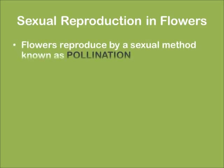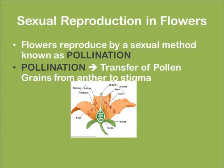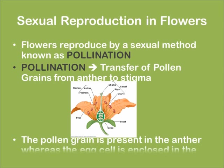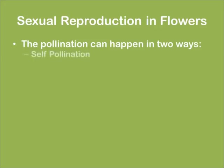The flower is reproduced by a sexual method called pollination. Pollination is the transfer of pollen grains from anther to stigma. The pollen grain is present in the anther whereas the egg cell is enclosed in the ovary. Pollination can happen in two ways: self-pollination and cross-pollination.